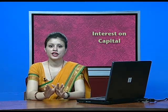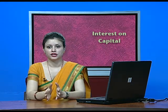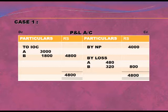When interest on capital is treated as a charge, we have to calculate IOC whether the result will be in loss or profit. In the P&L account under Case 1, we write net profit 4,000 on the credit side. Interest on capital: A's capital is 50,000 at 6% = 3,000; B's capital is 30,000 at 6% = 1,800. Total debit side is 4,800 versus credit side 4,000, giving a loss of Rs. 800, which will be divided among A and B in the ratio 3:2.